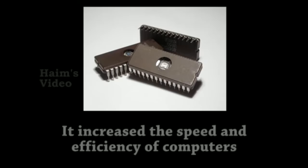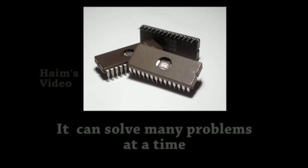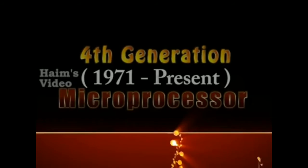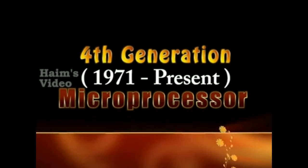Third generation, from 1964 to 1971 — integrated circuits. Transistors were made smaller in size and placed on silicon chips. This increased the speed and efficiency of computers, and they could solve many problems at a time.